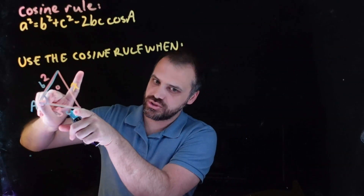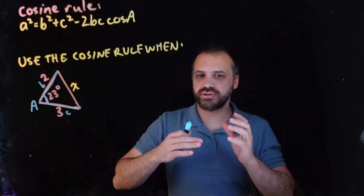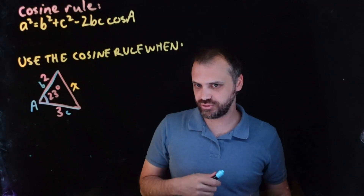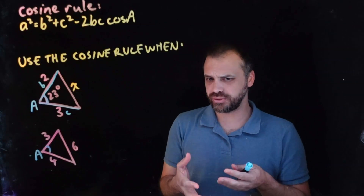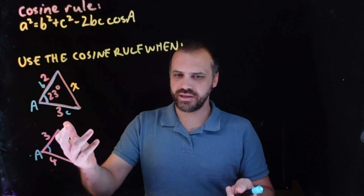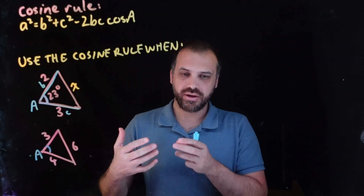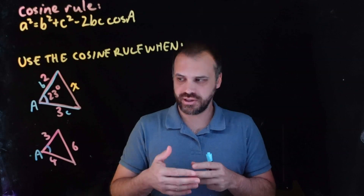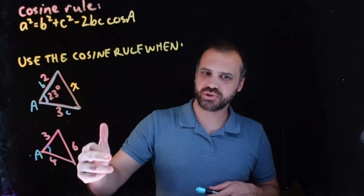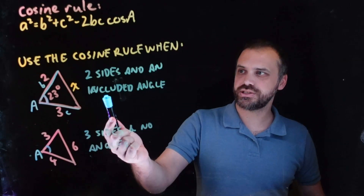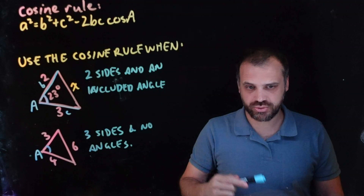So with two sides and an included angle, if we want to find a length, we've got to use the cosine rule. There is one other setup: if you know three lengths and want to find an angle, we have the same problem — side A, side B, side C, and we want angle A. We know something from each category, so we can't use the sine rule. Two sides and an included angle, or three sides and no angle — those are when you use the cosine rule.